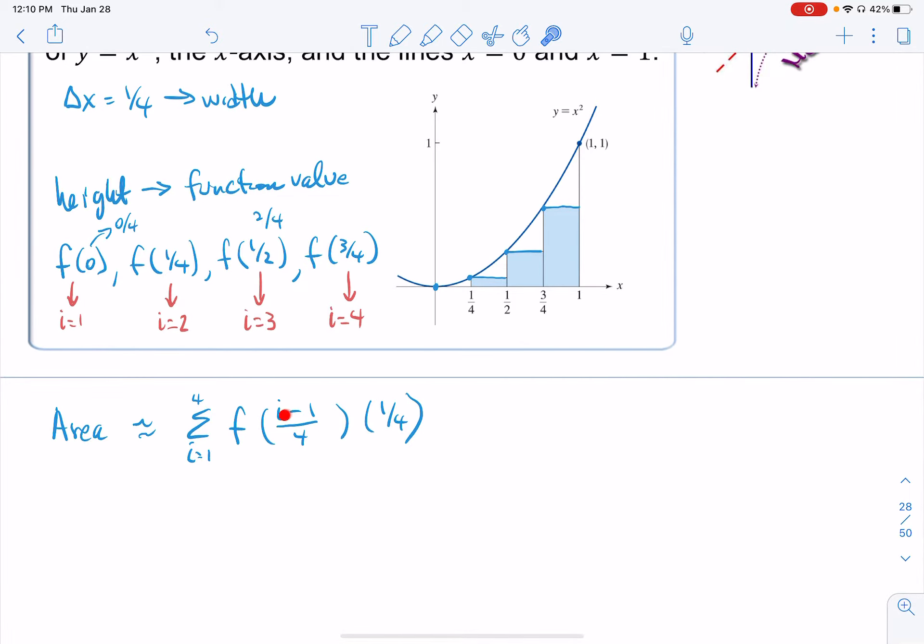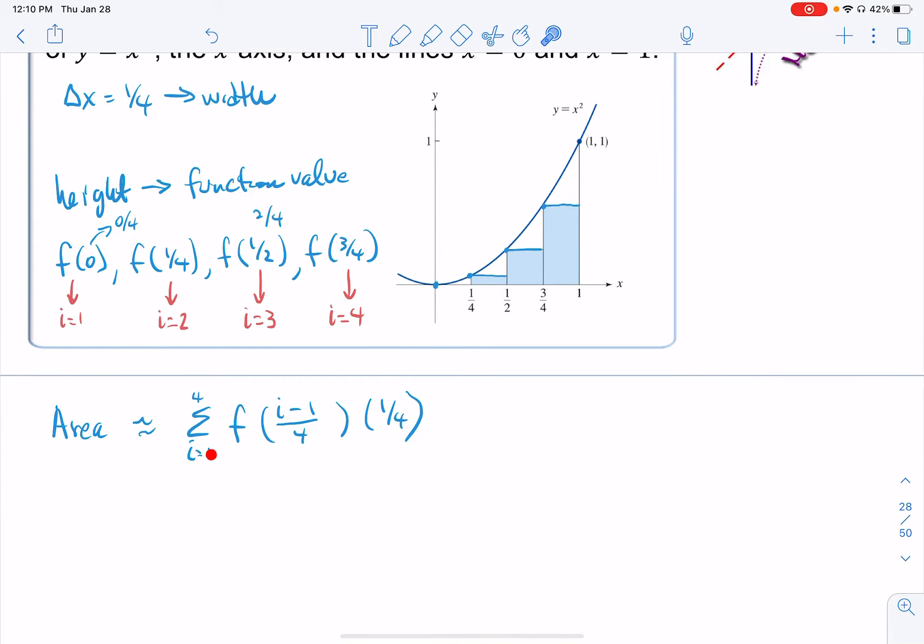So if I stick in one for this very first one, subtract one from it, I get zero divided by four, and I get f of zero, exactly what I wanted. Increase the counter by one, I stick in a two, two minus one gives me a one, wait wait wait, two minus one gives me a one divided by four, it's f of one-fourth, which is what I want. So here we go.